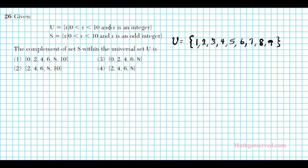These are the elements of the universal set. And then set S is all the integers between 0 and 10 that are odd. So in that case you are going to have 1, 3, 5, 7, 9. So what is the complement of set S? You can think of the complement of set S in U, S complement, as a set U minus the set S.